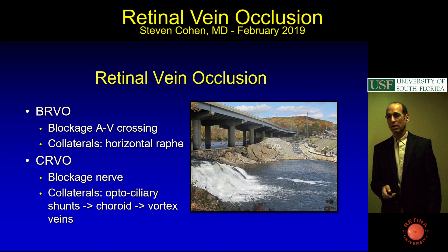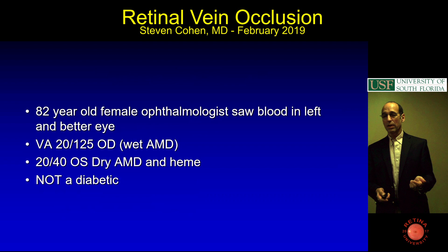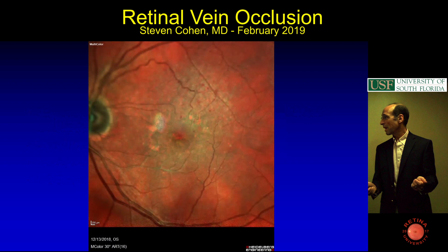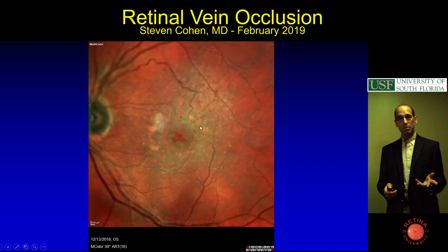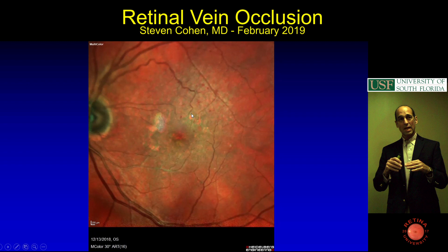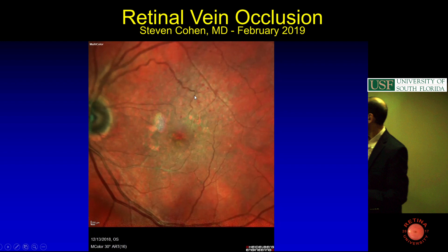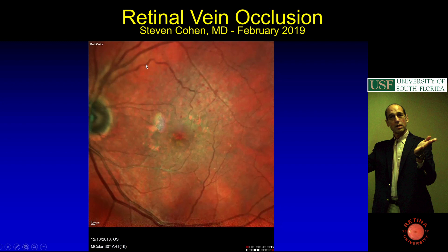Here's a case—an 82-year-old woman who had some blood in her left eye. Her right eye has wet AMD, and her left eye is asymptomatic but there was blood. She's not diabetic, and there are only a couple spots of blood but they're in the same area. If you see pathology in part of the retina, ask: does it respect the horizontal midline? There are maybe eight spots of blood, superior, around one of the veins—it's probably a branch vein occlusion. They can be very subtle.